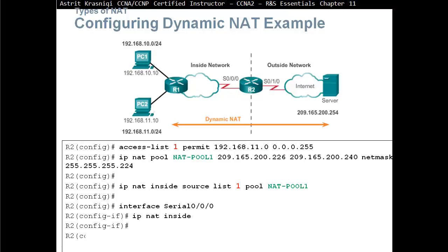Then we need to define the inside interface and outside interface. For example, on router 2, S0/0/0 is 'IP NAT inside' and interface serial S0/1/0 is 'IP NAT outside'.